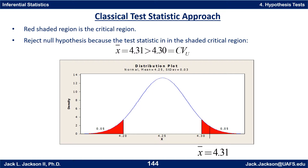Since our sample mean falls in the red critical region, there is enough evidence — beyond a reasonable doubt — to say the sample came from a different population. In the context of our problem, something has changed in the manufacturing process, and we should stop the assembly line and find out why we're making bigger pistons.